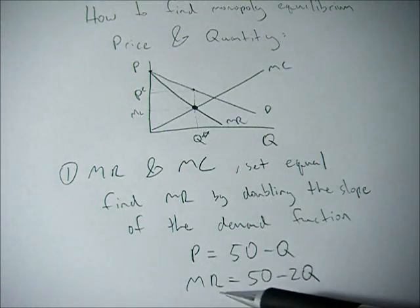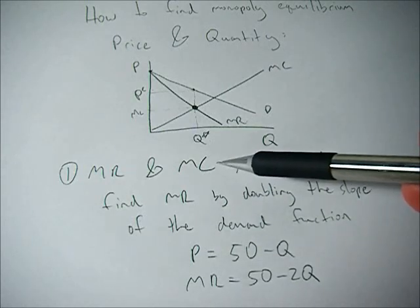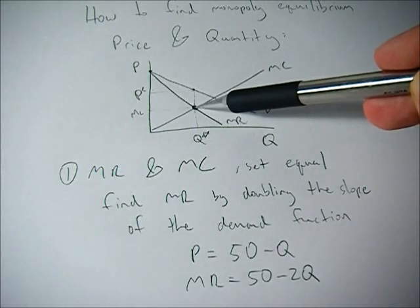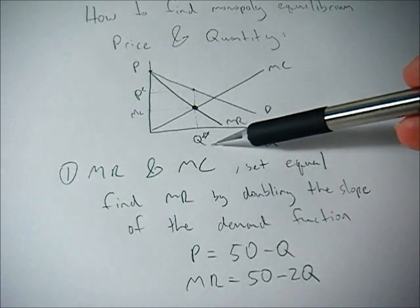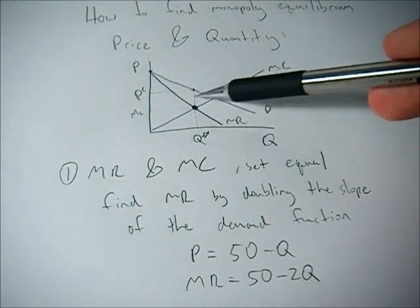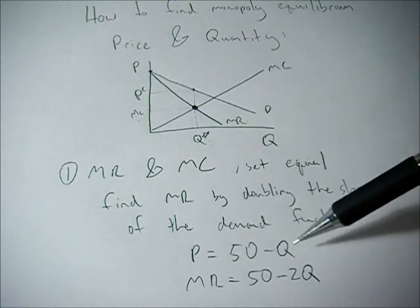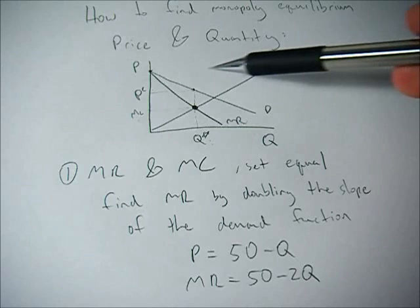So you can find the marginal revenue function easily by doubling the slope, setting it equal to your marginal cost, and then you can use that to calculate equilibrium quantity, equilibrium marginal cost, and equilibrium price, which is your equilibrium quantity plugged back into your original demand function.